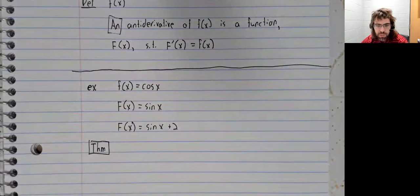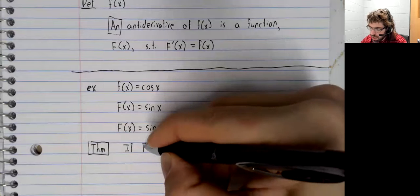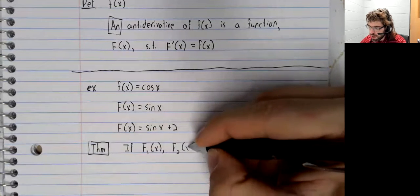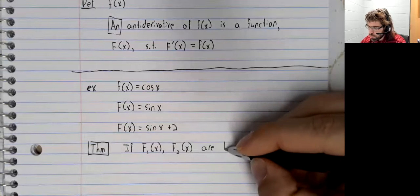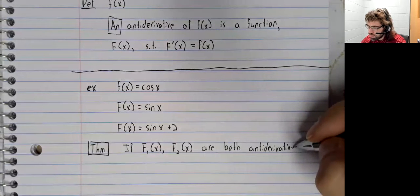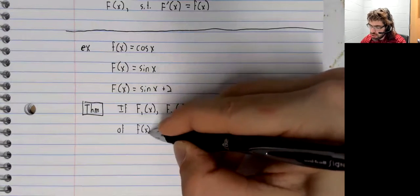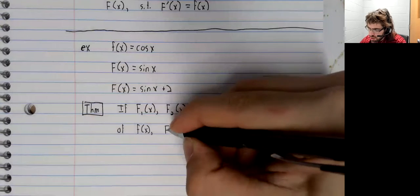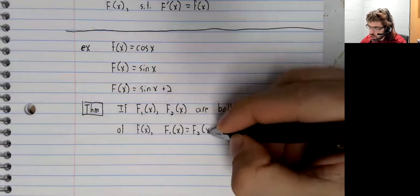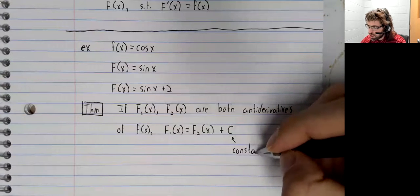We first mentioned this when we were talking about the mean value theorem. If f sub one of x and f sub two of x are both antiderivatives of the same function f of x, then one of these functions is just the other function plus a number, plus a constant.